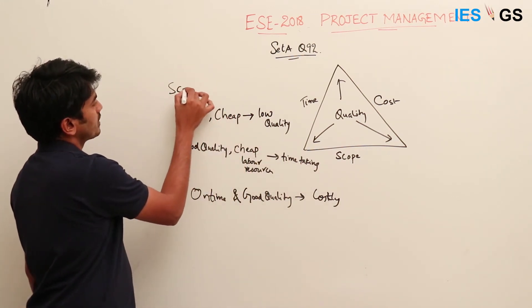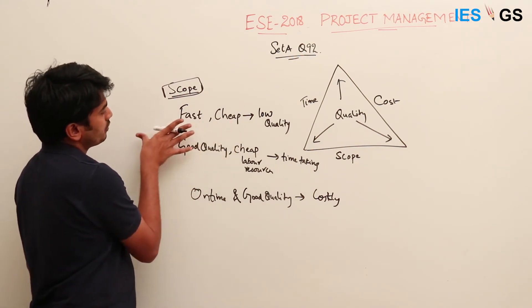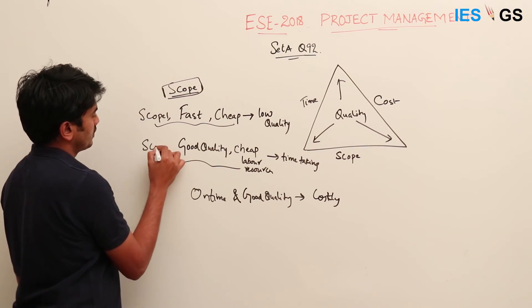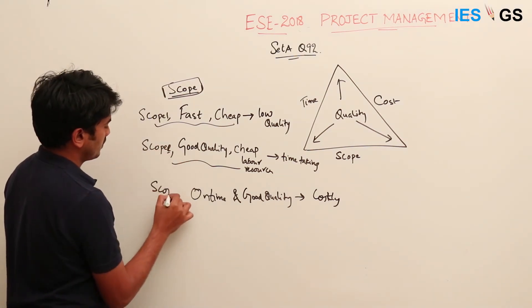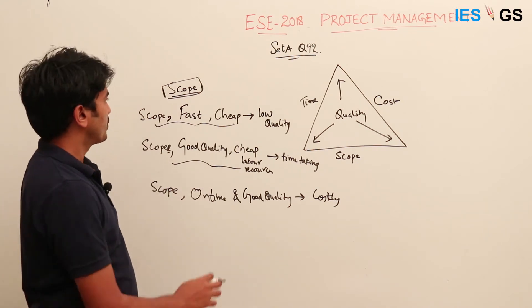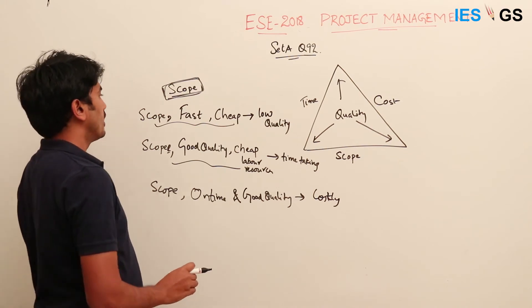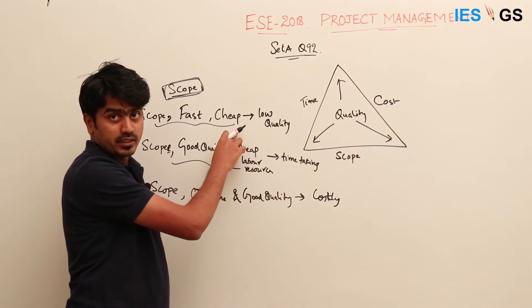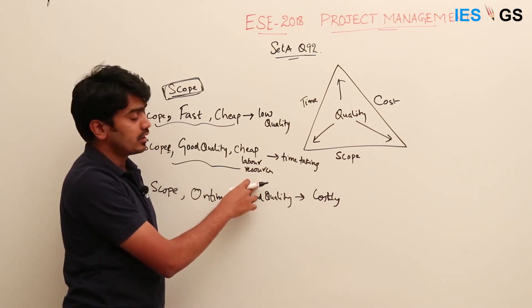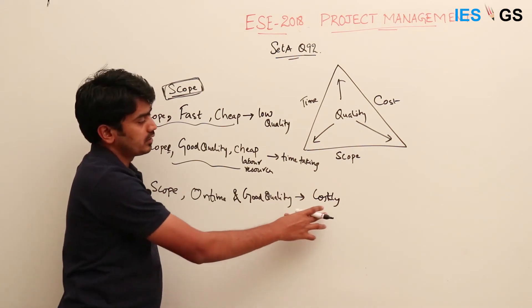Scope is part of these factors but is kept constant while the others vary. For example, if we take construction of a building — that is the scope, the end goal is to build a one-room building. If you build it very fast using cheap materials, it will have low quality. If it is good quality but labour is not very skilled, it will take more time. And if it is on time and good quality, the cost will go up. Multiple factors are determining the fourth dimension.